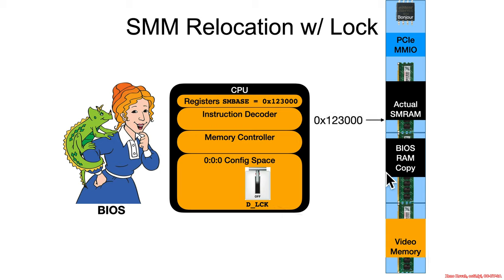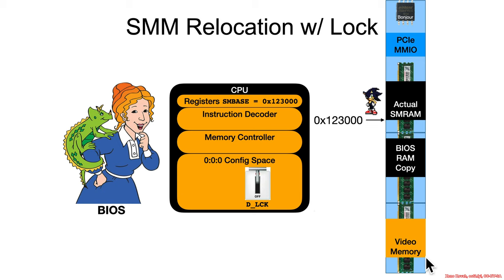That's great, except that code is typically moved elsewhere — the actual SM base is now at 0x123000, and the actual SMRAM code is hiding out there. So the delock and deopen mechanism helps protect the lower 128-kilobyte range, which is great if you never move out of that region, but we also need to understand how to protect the relocated SMRAM up at the higher address.